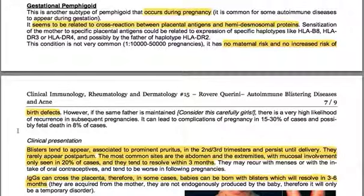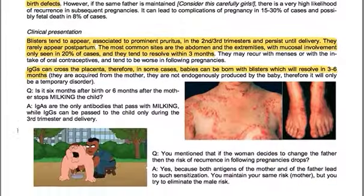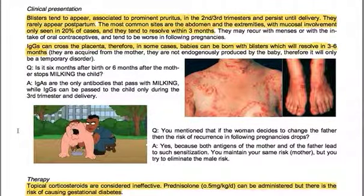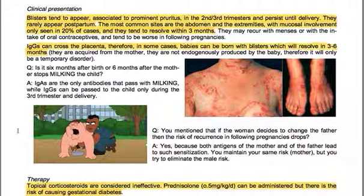There is no maternal risk and no increased risk of birth defects. However, if the same father is maintained, there is a very high likelihood of recurrence in subsequent pregnancies. It can lead to complications of pregnancy in 15–30% of cases and possibly fetal death in 8% of cases. Blisters tend to appear associated with prominent pruritus in the second to third trimester and persist until delivery. The most common sites are the abdomen and extremities, with mucosal involvement in only 20% of cases; lesions tend to resolve within 3 months.